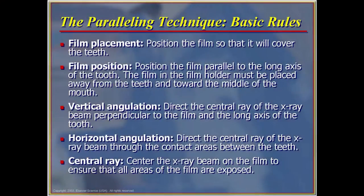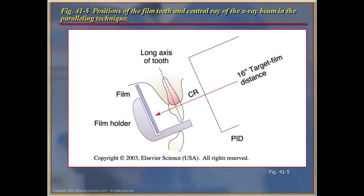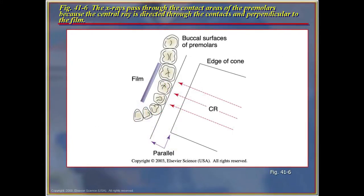Film placement is the most critical portion of taking the x-ray from the standpoint of technique. Position the film parallel to the long axis of the tooth. The film in the film holder must be placed away from the teeth and toward the middle of the mouth. Vertical angulation directs the central ray of the x-ray beam perpendicular to the film and the long axis of the tooth. Horizontal angulation directs the central ray beam through the contact areas between the teeth, and the central ray on the film ensures that all areas of the film are being exposed.